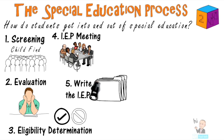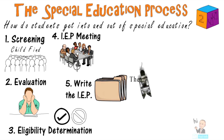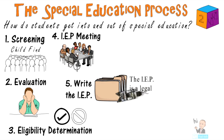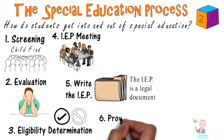The IEP should contain short and long-term goals, strengths and weaknesses, transition planning, present level of academic achievement, and other required components. It's important to know that the IEP is in fact a legal document.